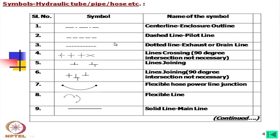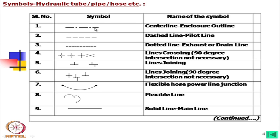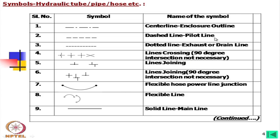The enclosure outline means that sometimes we have a manifold — a manifold consists of a few valves together. The symbols for all components, like a pressure relief valve and direction valves, are drawn separately and then enclosed by this line, indicating it might be a manifold. The dashed line means this is usually the pilot line.